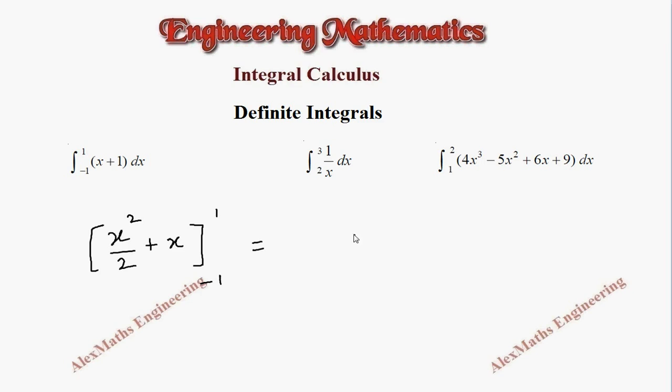The upper limit is 1. When you put 1, it is 1²/2 + 1. After that we have to take the lower limit and substitute for x. When you put -1 for x, this will be (-1)²/2 and -1. So wherever x is there, we first substitute the upper limit, then minus, and we substitute the lower limit.